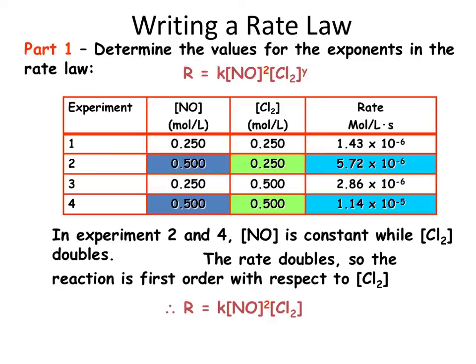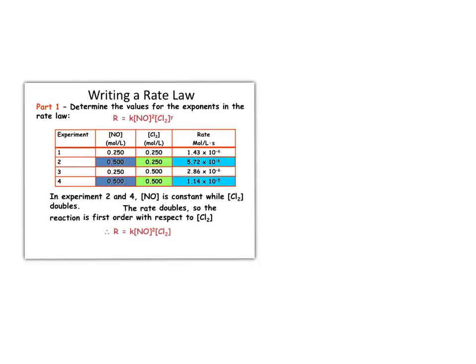We're going to take the same exact approach as we did previously, where we're going to look for experiments where, in this case, nitrogen monoxide is held constant and chlorine is manipulated, and compare those relative rates. So just to show you the work for this, we're going to set up a ratio, just like before, between, in this case, experiment 4 and experiment 2.